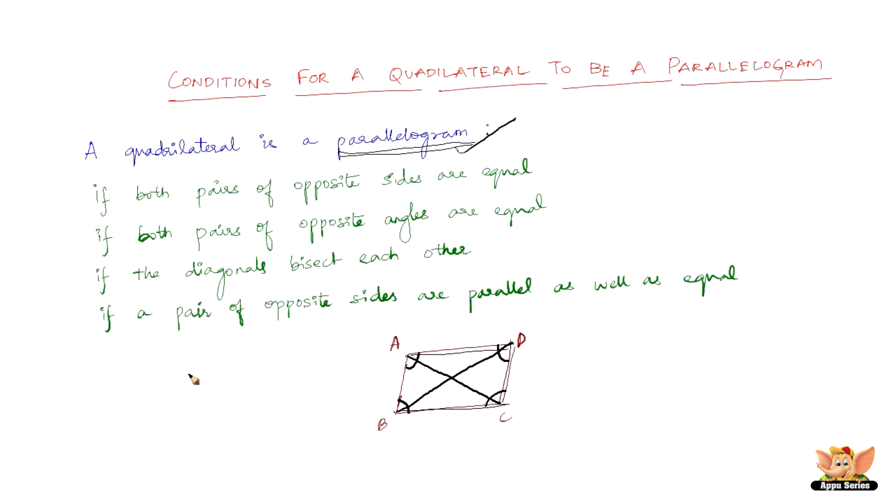The fourth condition is like this: if a pair of opposite sides are parallel as well as equal. Now, say for example, AD is parallel to BC and at the same time they are equal to each other, then also the given quadrilateral is a parallelogram.